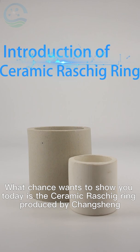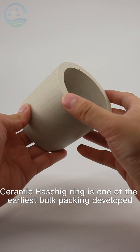What Chance wants to show you today is the ceramic Raschig ring produced by Changsheng. Ceramic Raschig ring is one of the earliest bulk packing developed.